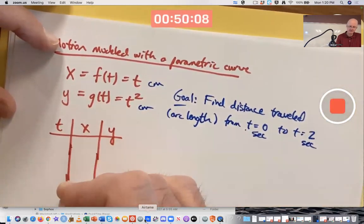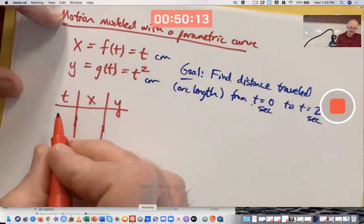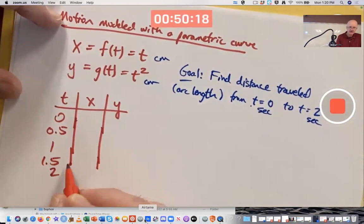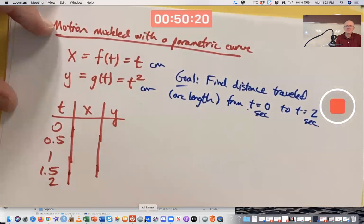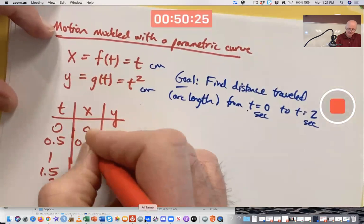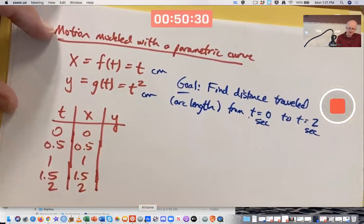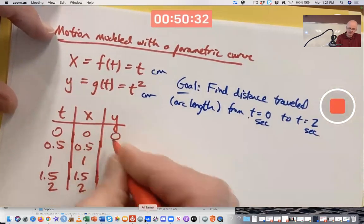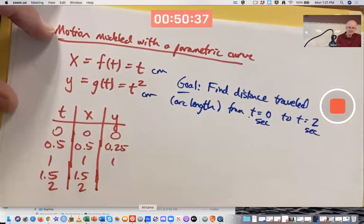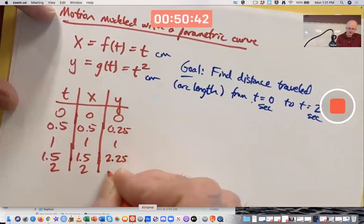Make a table of values for three variables: t, x, and y. Let's let t go up by half a unit each time. And then use these parametric equations to figure out x and y. x equals t, so the value of x is the same as t in each case. y equals t squared. 0 squared is 0, 0.5 squared is 0.25, 1 squared is 1, 1.5 squared is 2.25, and 2 squared is 4.